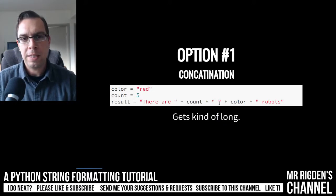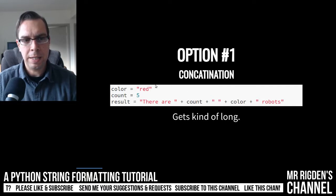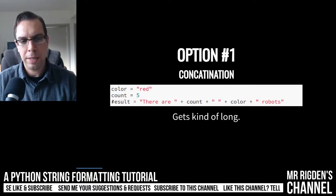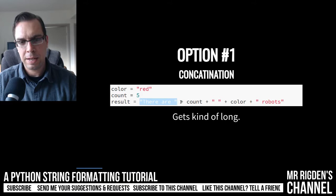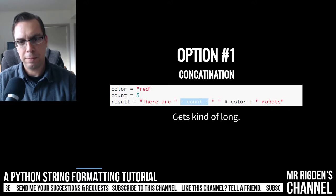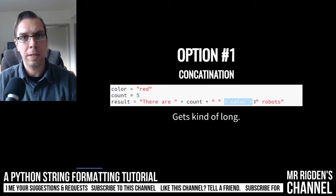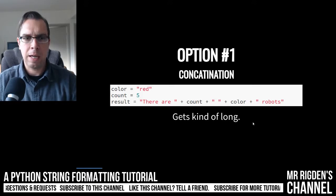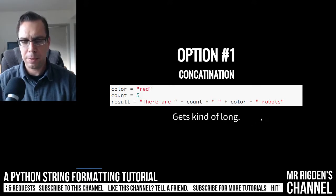Okay, option one is concatenation. So we can get our variables here and we can do result and just kind of add them together. Hopefully you've seen string concatenation before in Python. It can get kind of long and you can't do anything really fancy with it.